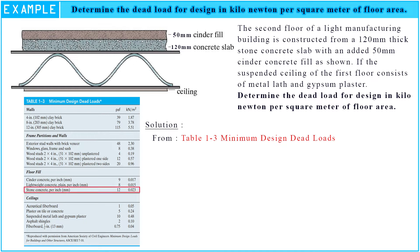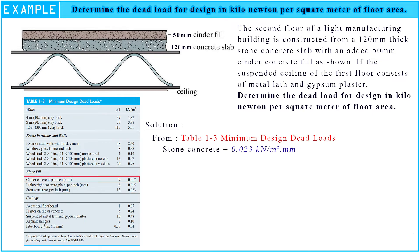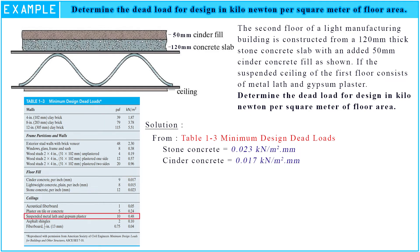We see the floor fill stone concrete is 0.023 kN per square meter per millimeter. After that, we see the cinder concrete is 0.017 kN per square meter per millimeter. The ceiling suspended metal lath and gypsum plaster is 0.48 kN per square meter.